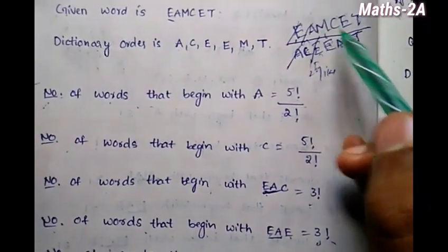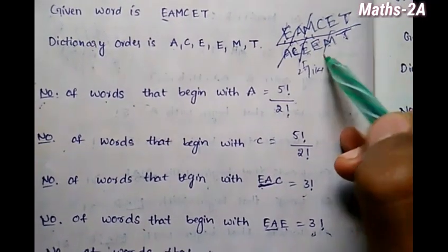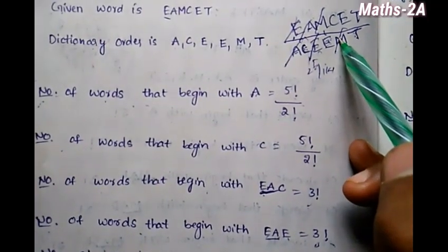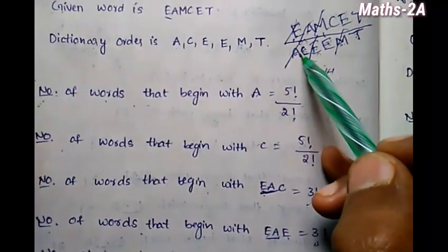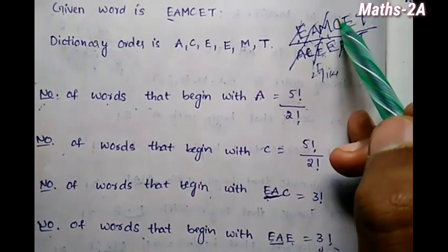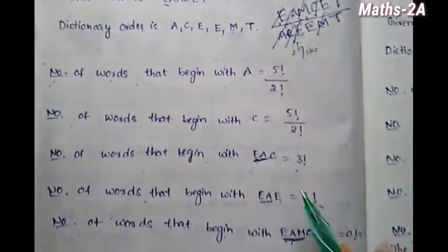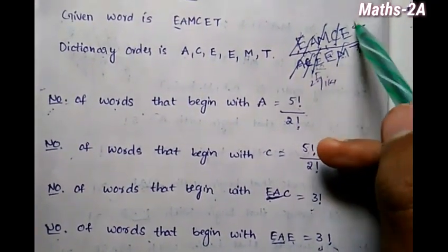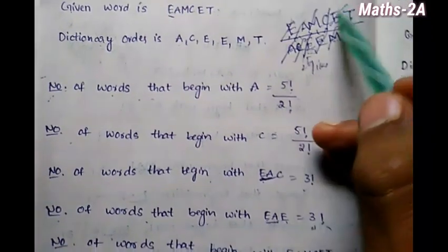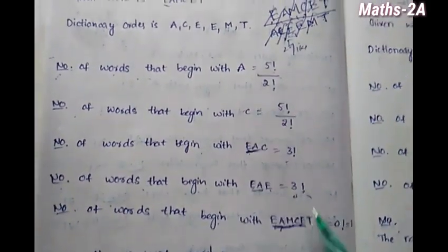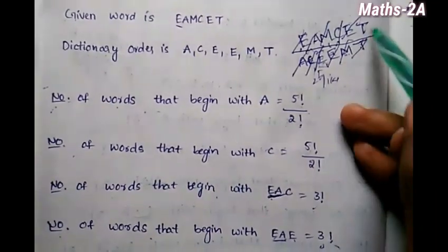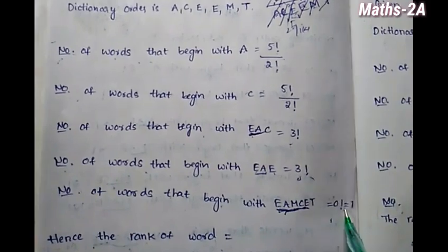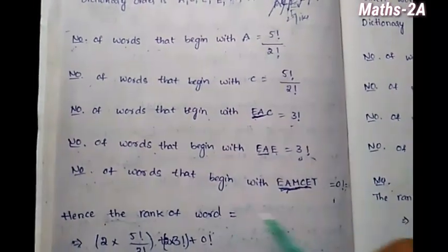So next letter is M. M will cancel, then C will cancel, then E will cancel, then T will cancel. The last one has a value of 0 factorial, which equals 1.